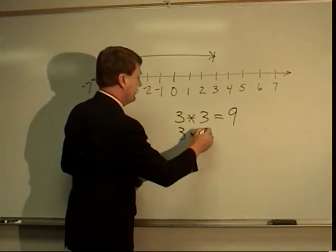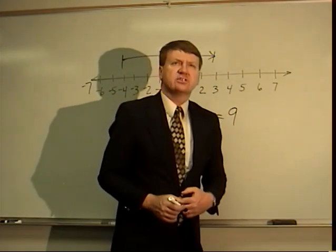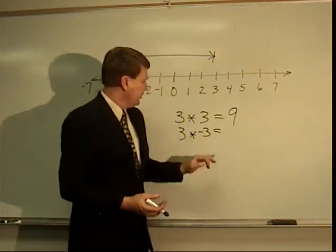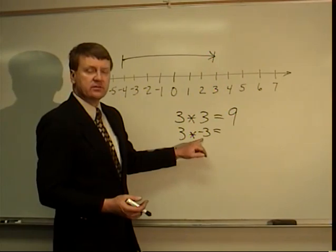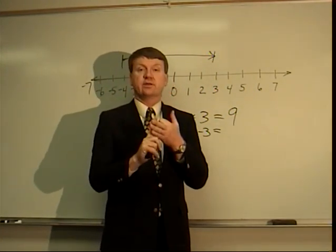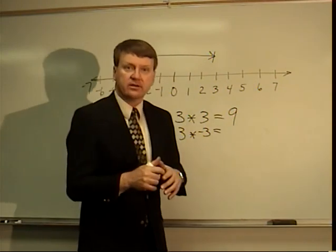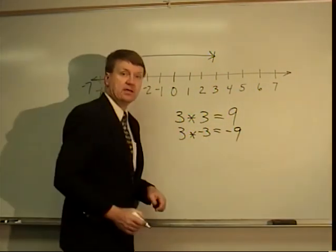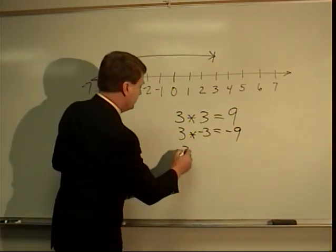3 times negative 3. Well, you know what? If multiplication is just a faster way to do adding, in a way it is, you have 3 negative 3's. Negative 3 plus negative 3 plus negative 3. Well that would be negative 9. Thus,